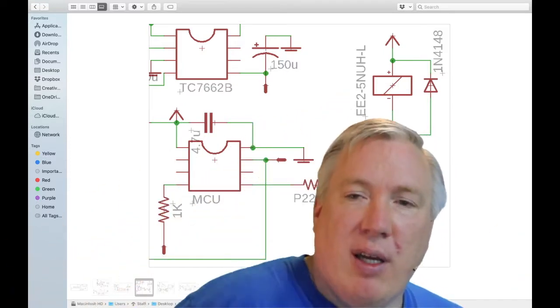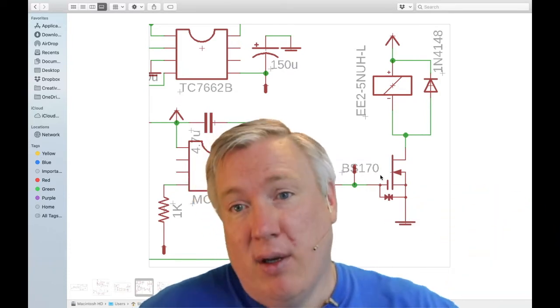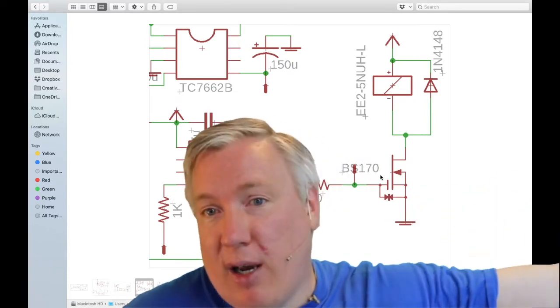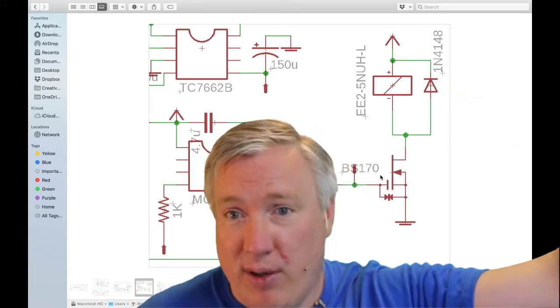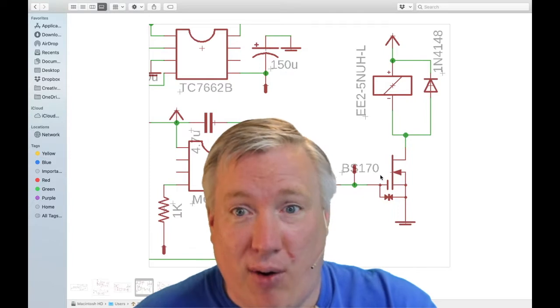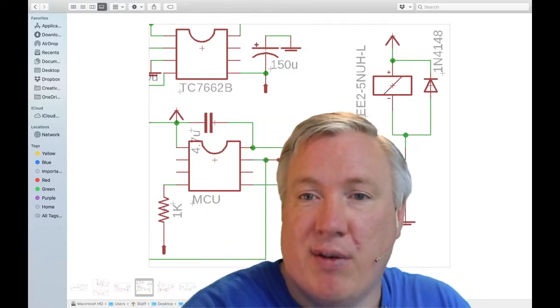This is also a non-latching relay, which means that if power is lost to the pedal and you're in true bypass mode, it'll automatically switch to true bypass and the signal will pass through. If you're in buffered mode, it's still going through the circuit, so if there's no power, the circuit won't be passing any signal.